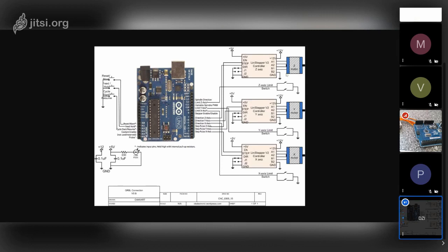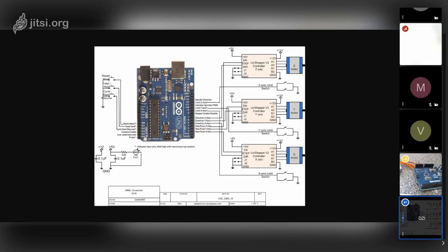Apart from controlling the axes with step and direction and potentially having end stop switches, there are a couple of other pins available. There's a reset/abort - you can connect a switch that will stop whatever the machine is doing, which is useful for safety. There's a feed hold which stops everything and pauses for a bit. And there's a resume button so you're able to pause and resume whatever the machine is doing - useful for some applications.